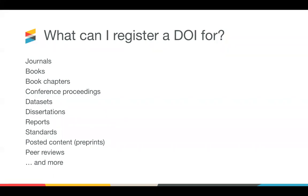At Crossref, we currently support deposits for the following types of content: journals, books, book chapters, conference proceedings, reports, dissertations, standards, posted content — which we also know as preprints — and peer reviews. You may register other types of content that don't fit into these categories, and we collect some basic metadata, usually as a dataset, if it doesn't quite fit into one of these existing categories. We're hoping to provide support for additional content types in future.